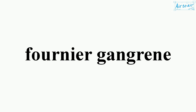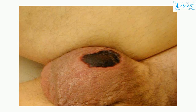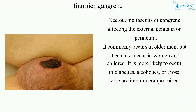Fournier gangrene is necrotizing fasciitis or gangrene affecting the external genitalia or perineum. It commonly occurs in older men, but it can also occur in women and children. It is more likely to occur in diabetics, alcoholics, or those who are immunocompromised.